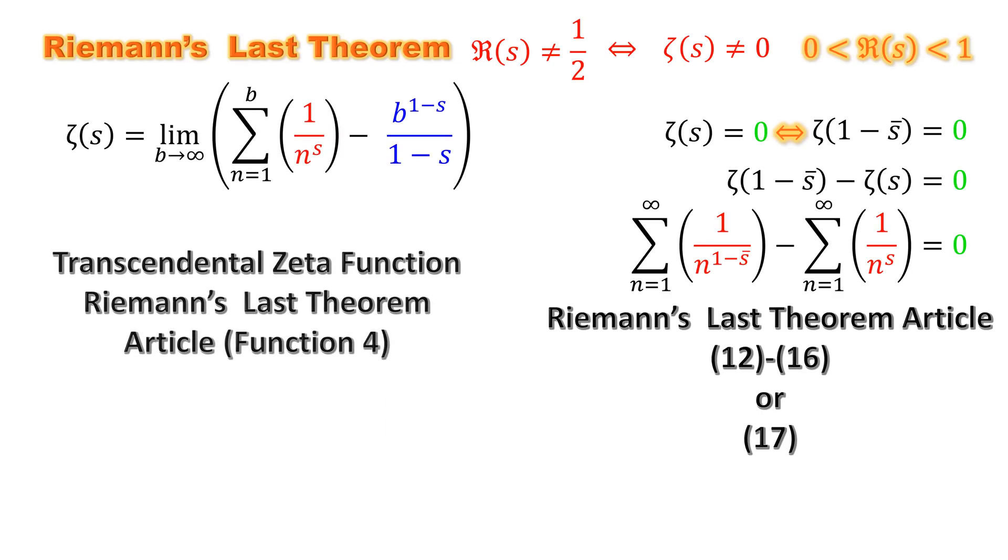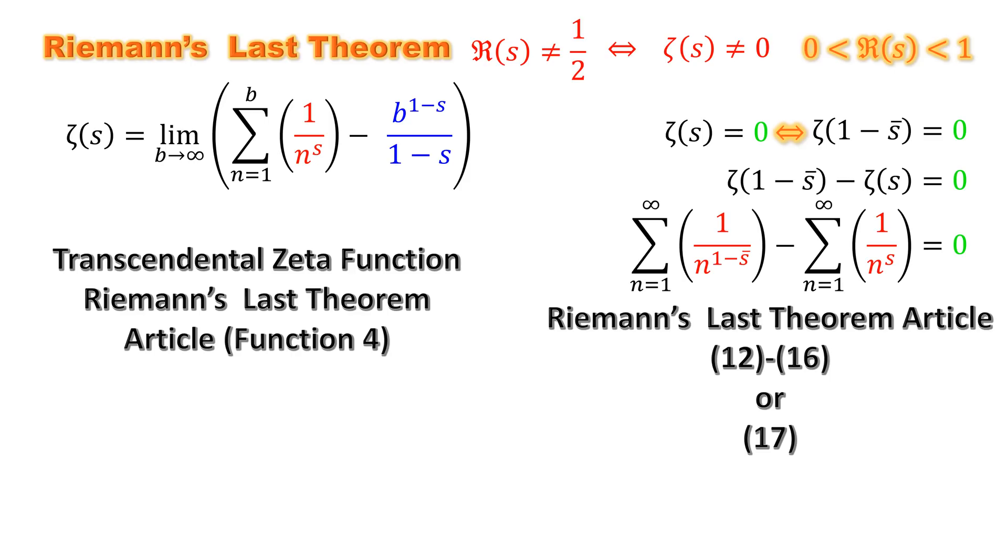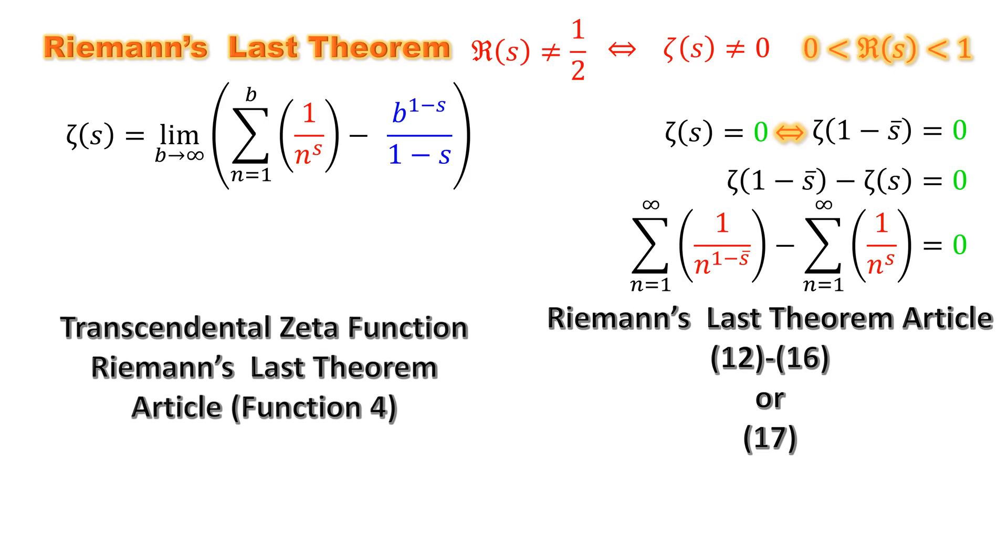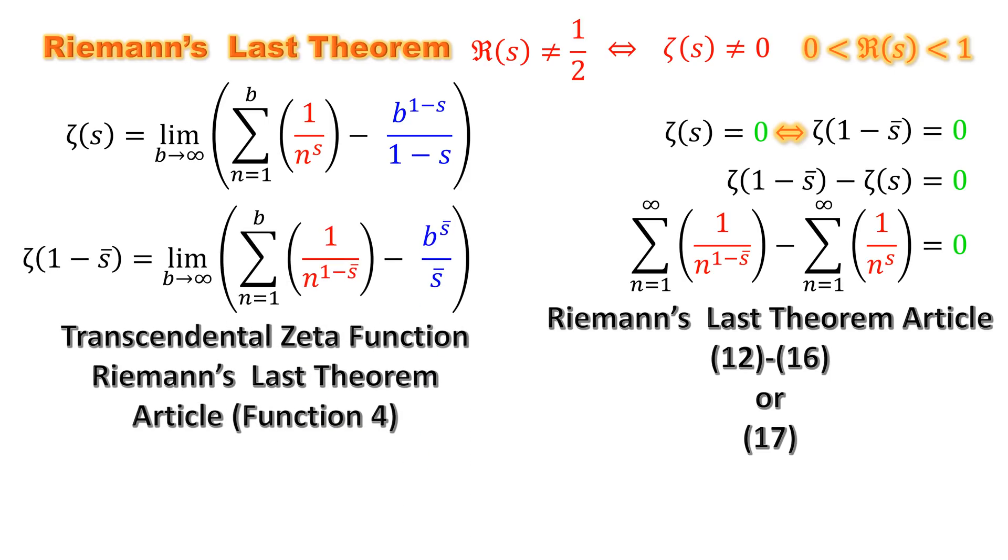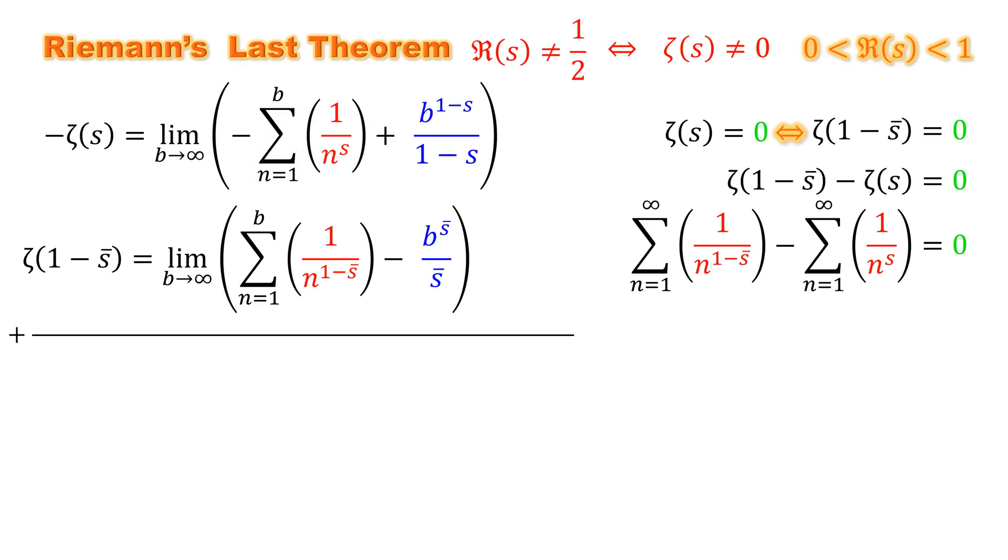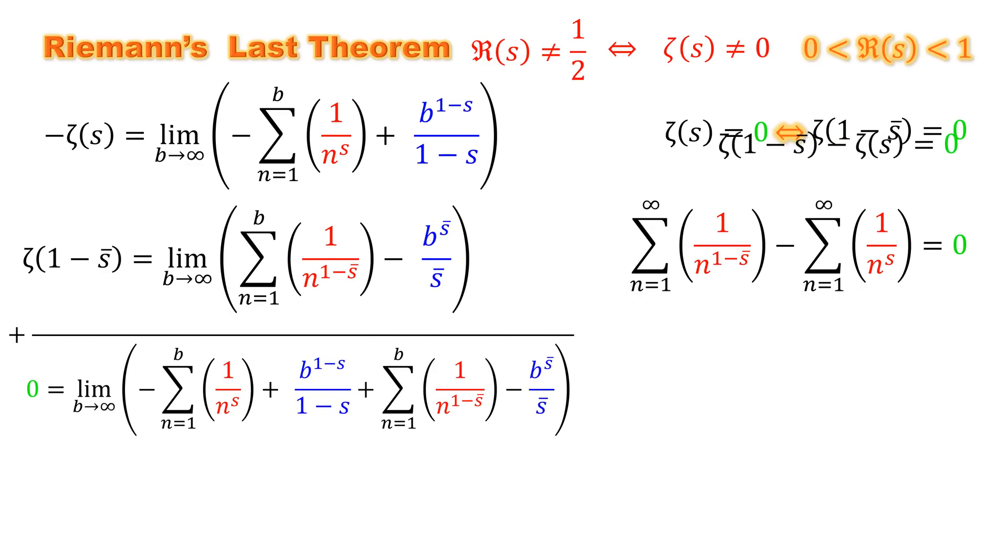This is transcendental zeta function that we can write it for one minus s conjugate. Now let's alter the sign of zeta s. Now we want to take a sum. Notice the green zero considering this and this, hence the zero.